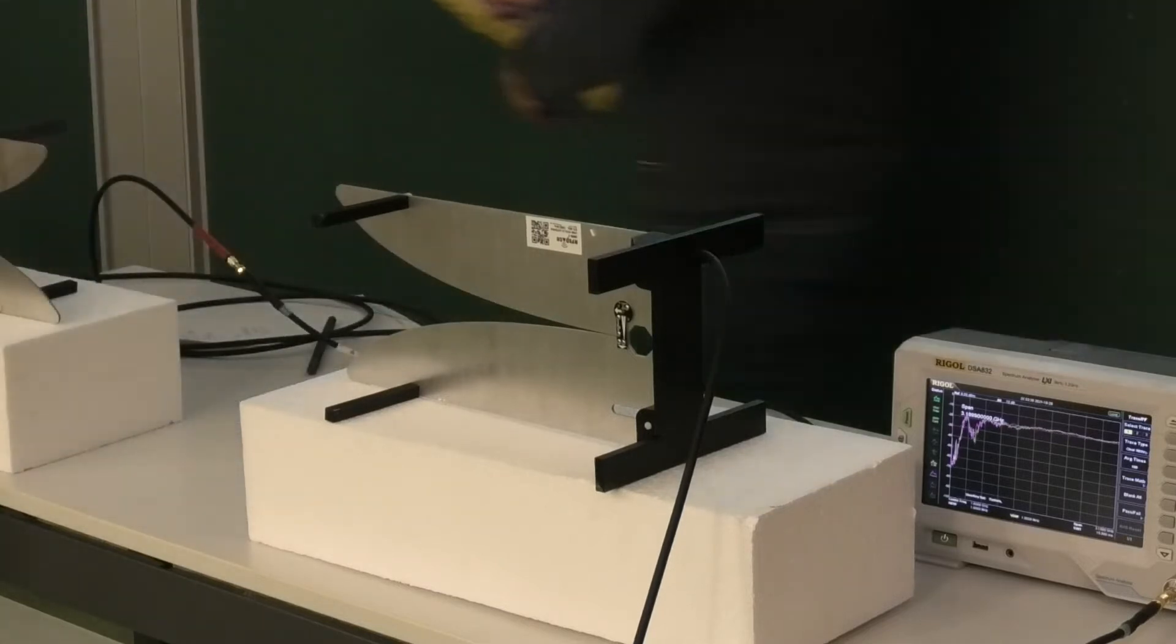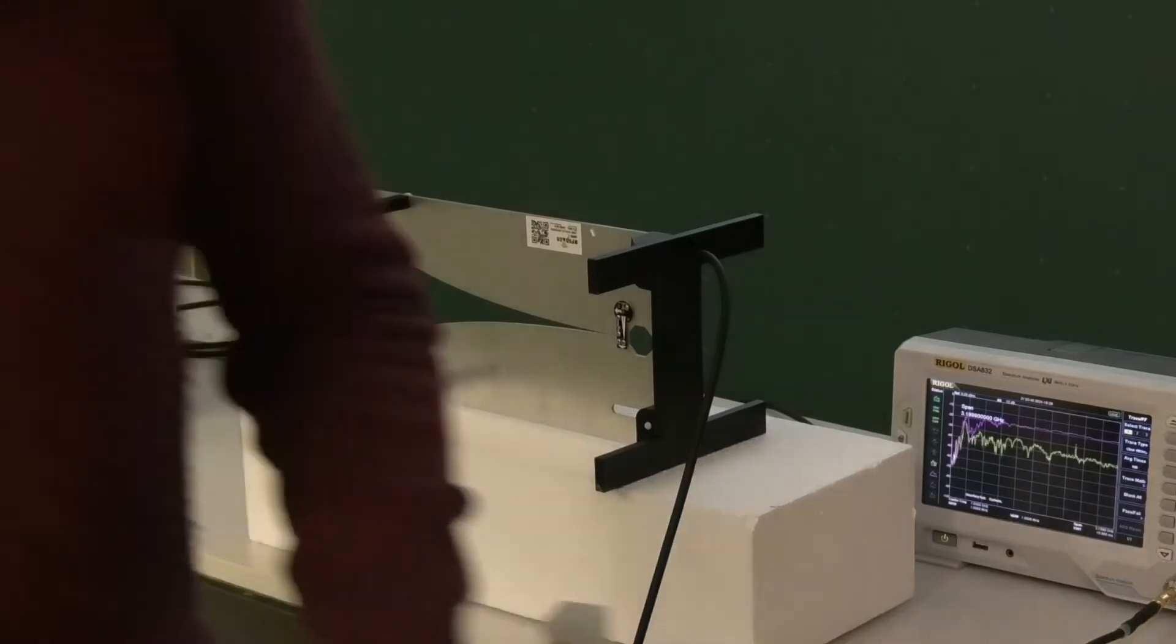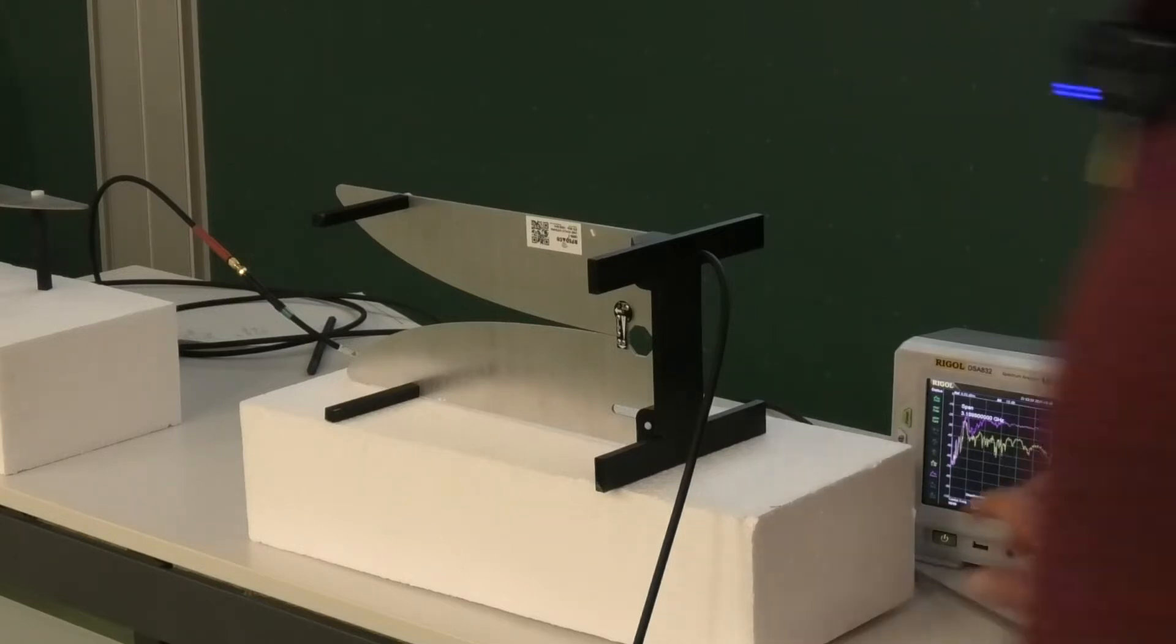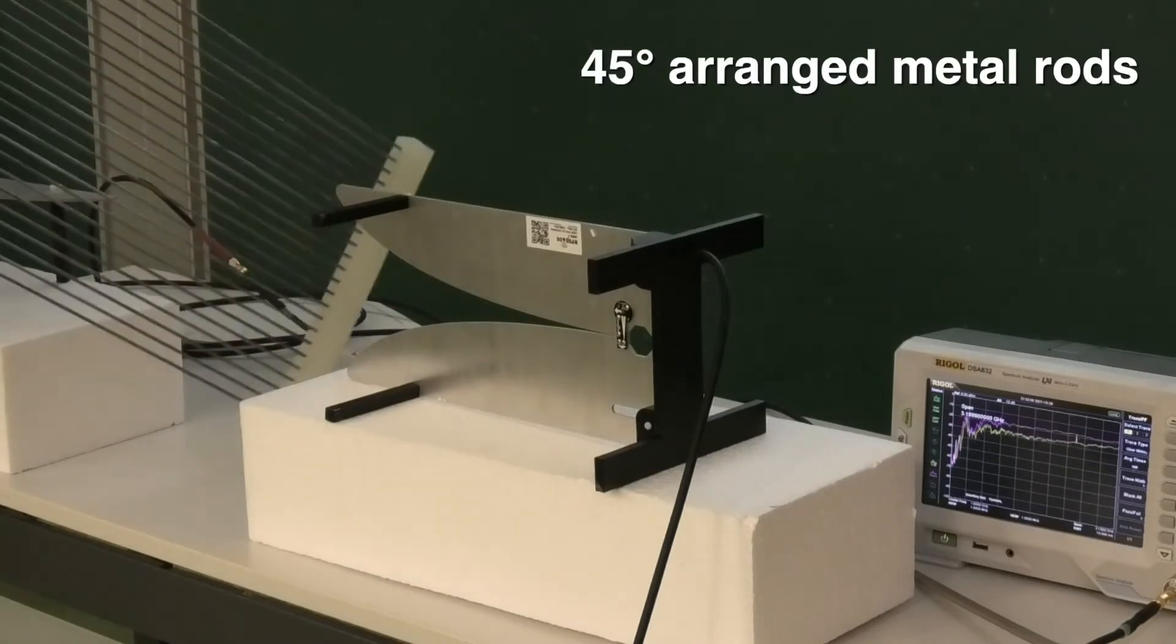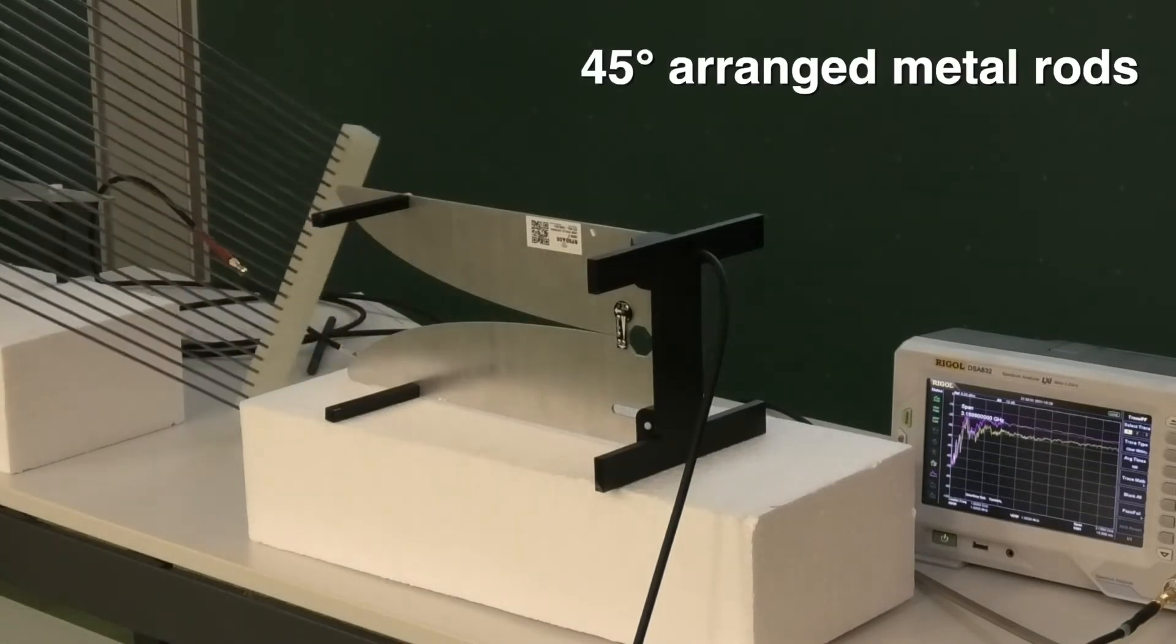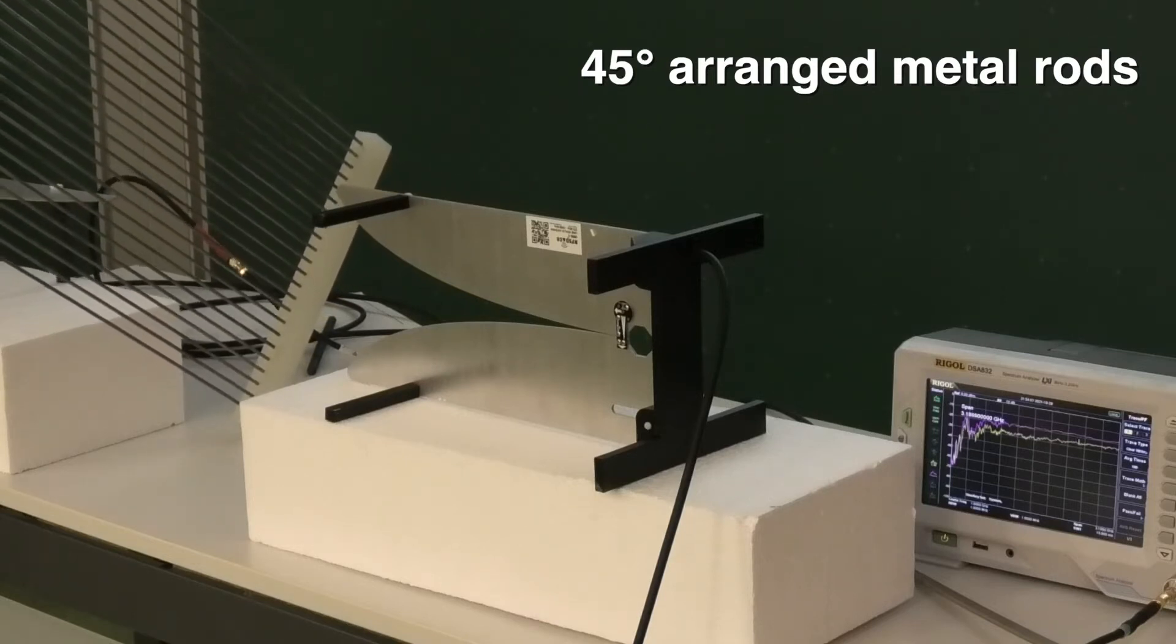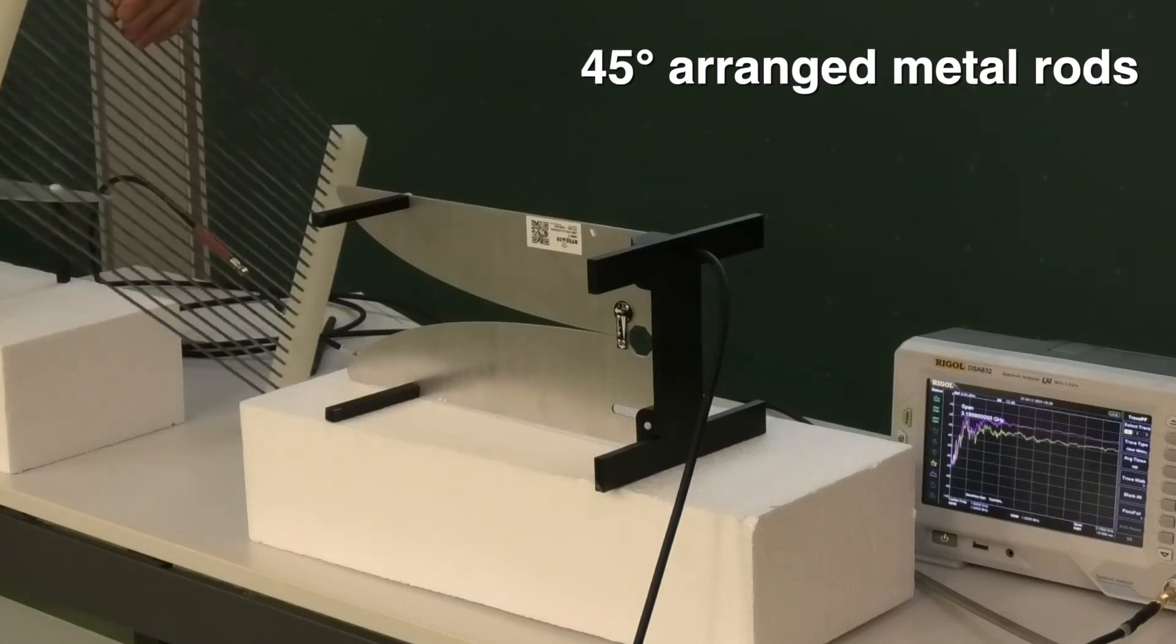And now comes the part which I like most in this. Now, we do the following thing. We rotate one antenna horizontal and the other vertical. Now, you see the coupling between the antennas. You see it back here. It's 20 dB down. So, the coupling is relatively weak between the two antennas now. And now, I hold this in at a 45 degree angle. And suddenly, the signal goes up.